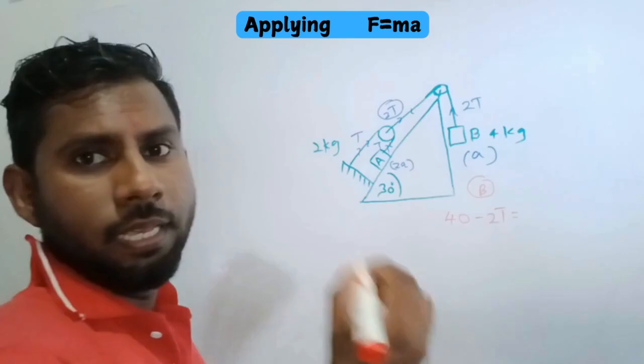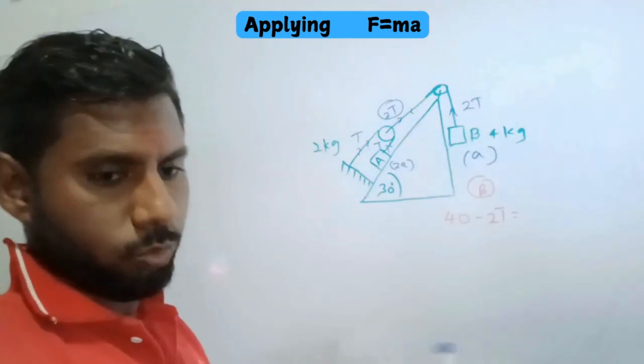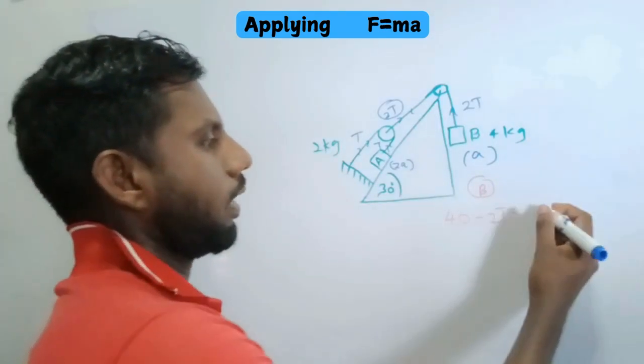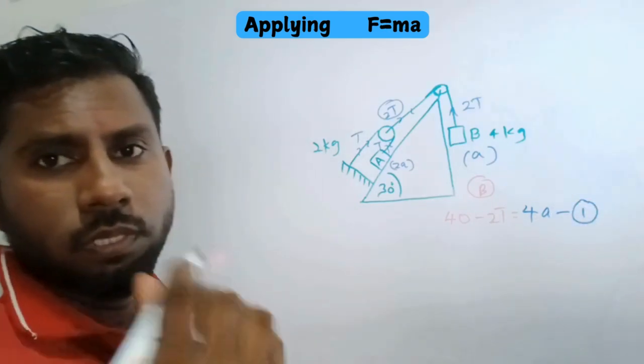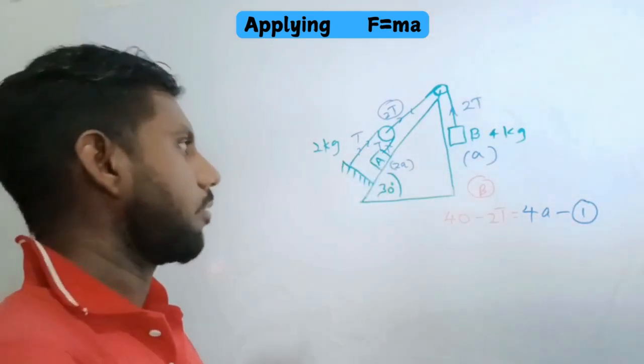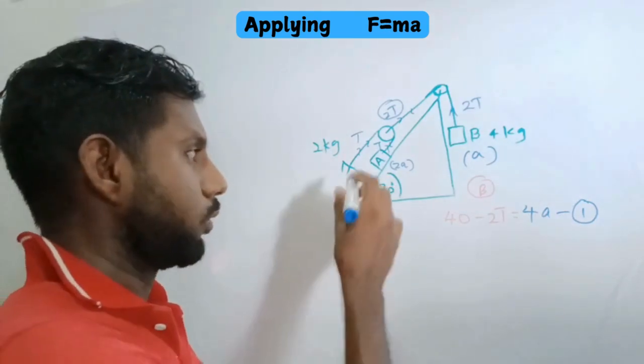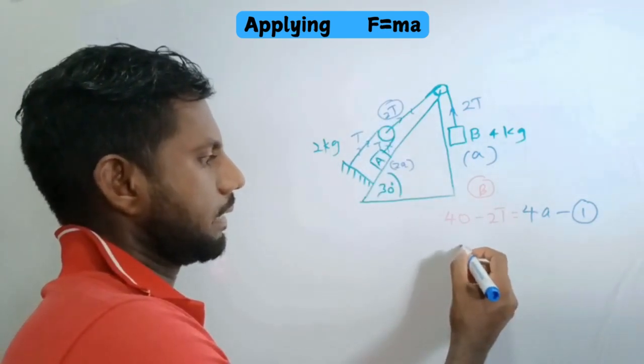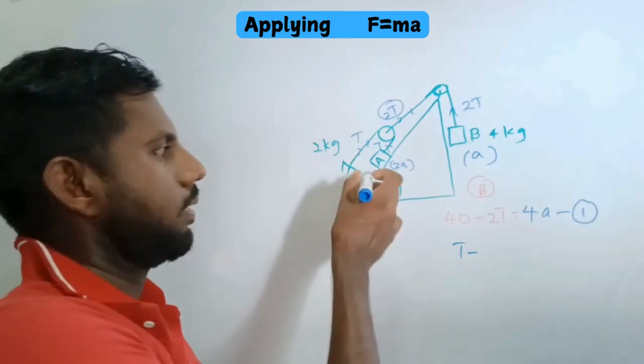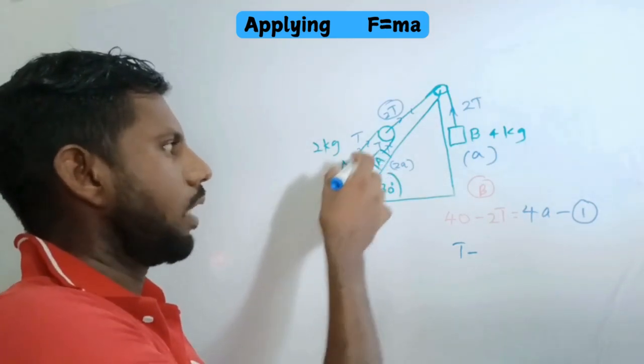The second equation we can write for A. Because of this tension it goes up, so it's T minus the downward force.